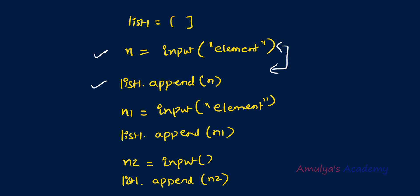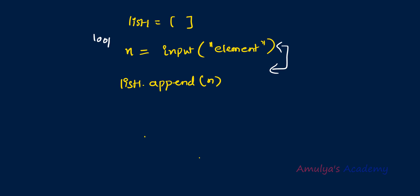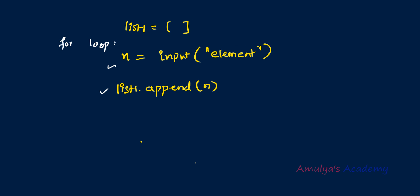First we'll see how to write this program using a for loop, then using a while loop. Instead of repeating the input and append lines, we include them inside a loop. To use a for loop, we first need to know how many elements the user wants to enter, and run the loop body that many times. So first we ask the user to enter how many elements they want, then run the for loop n times, taking input and appending each time.